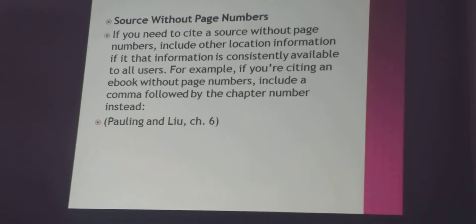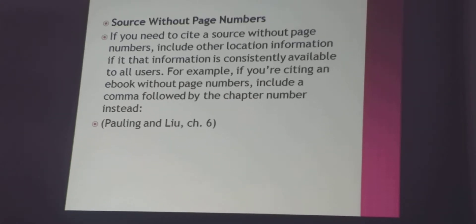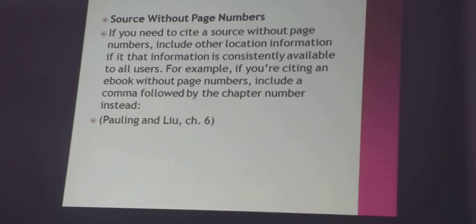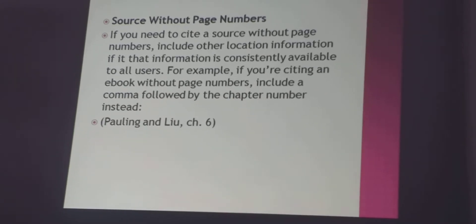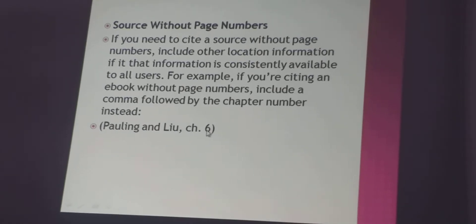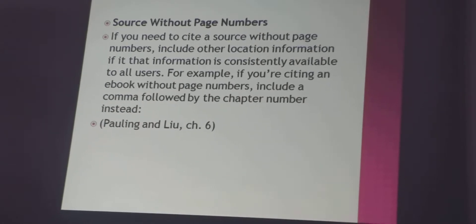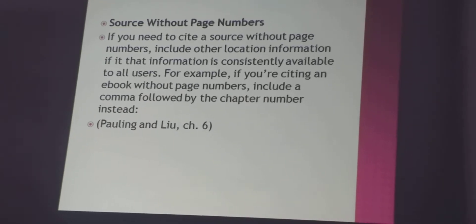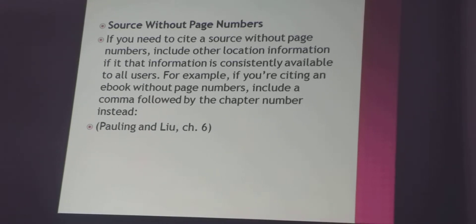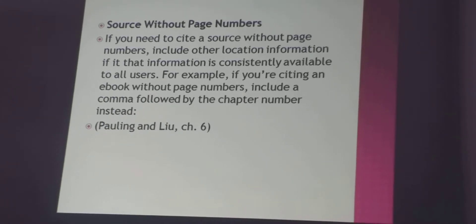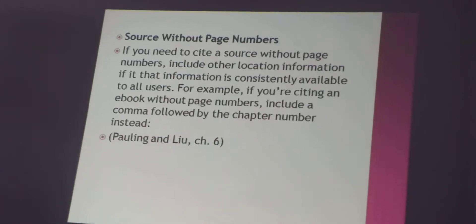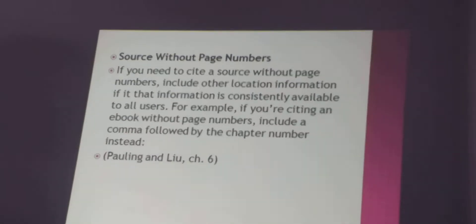In some cases, particularly with ebooks, the original printed version has page numbers but the electronic version does not. In that case, you put the chapter number. Similarly, when taking from a website in MLA, you count the paragraph number — but instead of writing 'para' as in APA (P-A-R-A), in MLA you write 'par' (P-A-R) followed by the number.